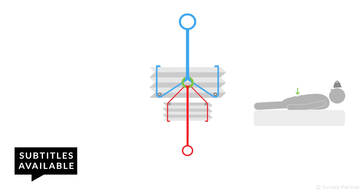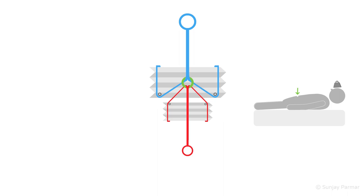Hi there. This is an animated analogy to explain how Beevor's sign occurs. This is the pathological upward movement of the umbilicus on supine neck flexion due to lower rectus abdominis weakness. Beevor's sign is a useful examination finding found in lower thoracic cord lesions and certain myopathies.